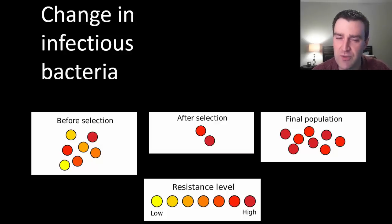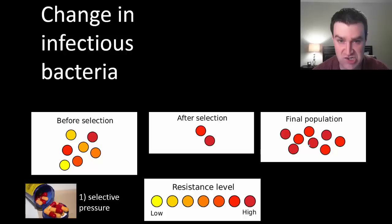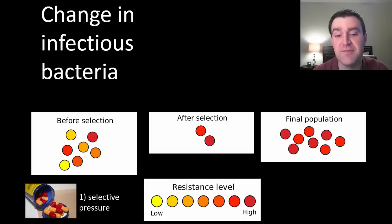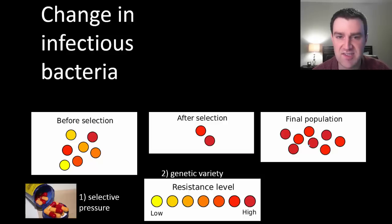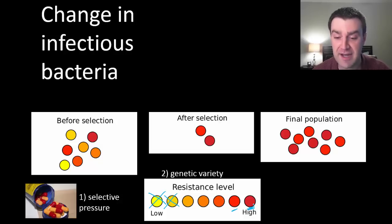Bacteria wouldn't have evolved resistance until we started taking these medications so much, providing an environment that makes it hard for them to survive. Until we started taking antibiotic medications so much, there really wasn't the selective pressure that drove them to eventually evolve a solution. If you have a selective pressure and genetic variety, there may be natural variety among bacterial individuals in how susceptible they are to antibiotics — some bacteria get killed very easily, while others have ways to survive.